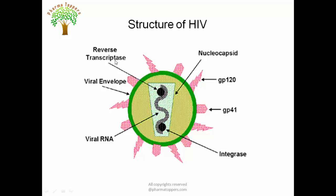The genetic material present in the core envelope consists of different enzymes. First, we have reverse transcriptase, which converts viral RNA into DNA. Next, we have integrase, which integrates the viral DNA into the host DNA. Additionally, there is the enzyme protease — not shown in the diagram — which synthesizes viral proteins and is responsible for viral assembly.